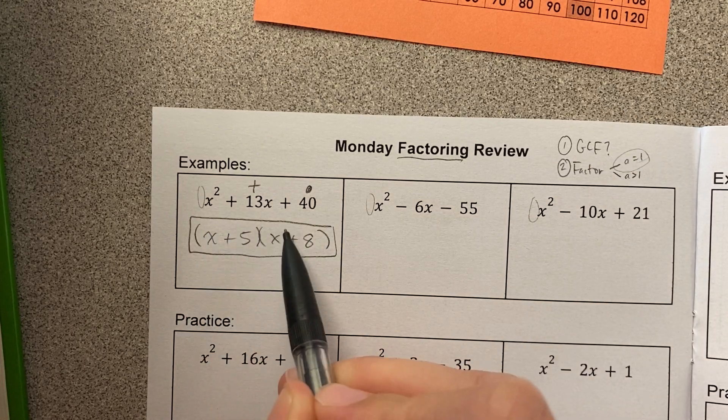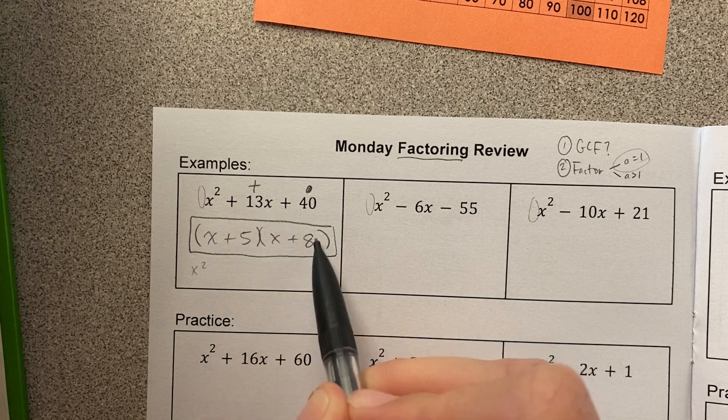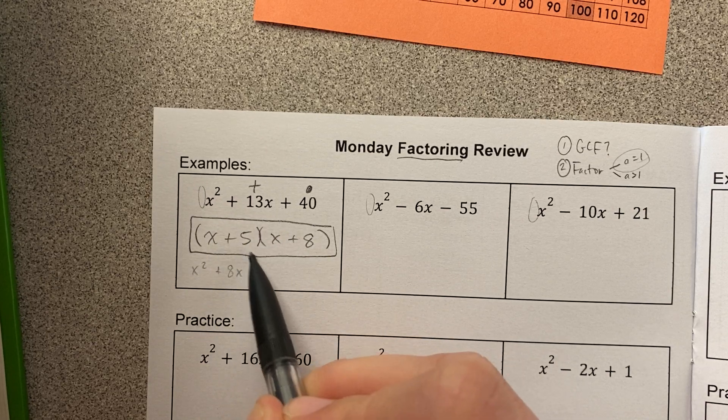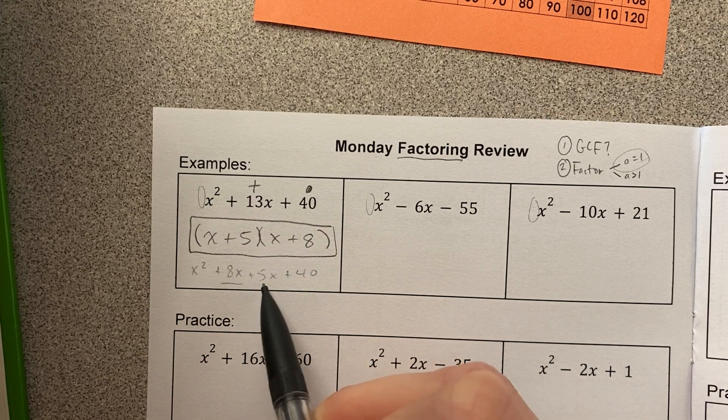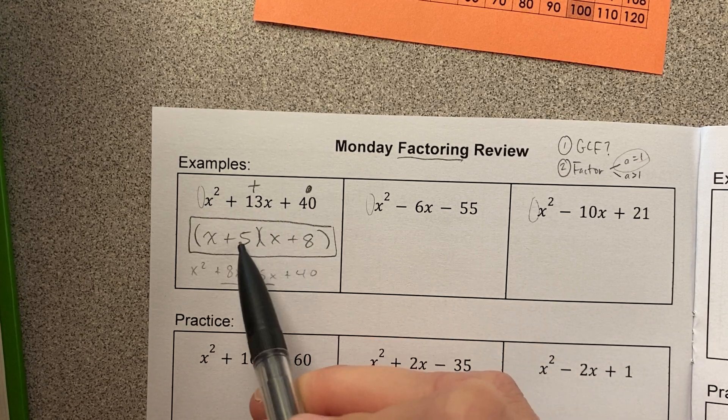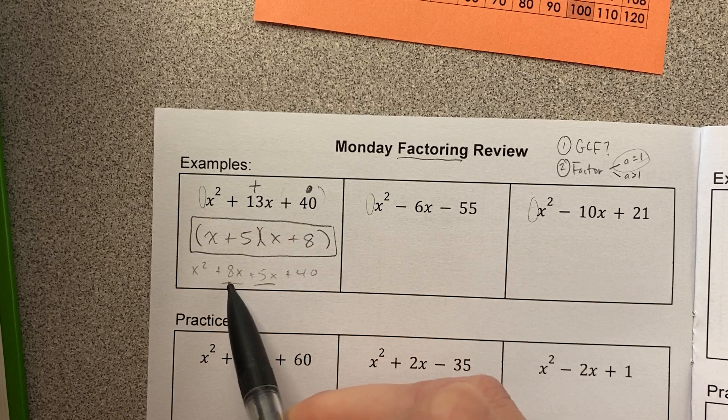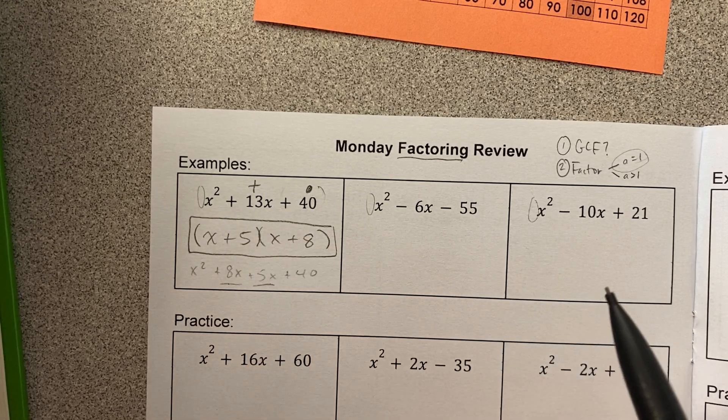Just a reminder about why this works. x times x is x². x times 8 is plus 8x plus 5x, and then plus 40. Then I would combine my like terms. And so that's why it's always these two numbers multiply to this, and then when I add them, I get this.